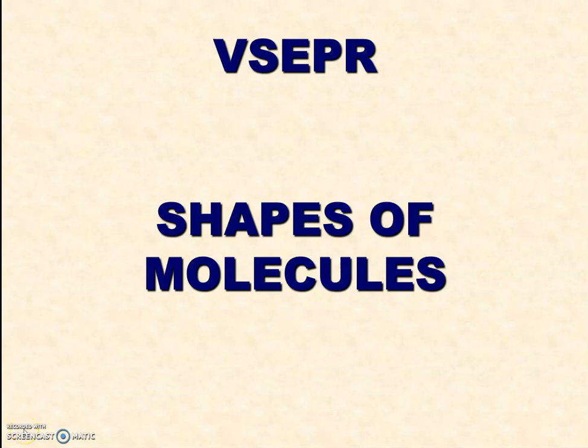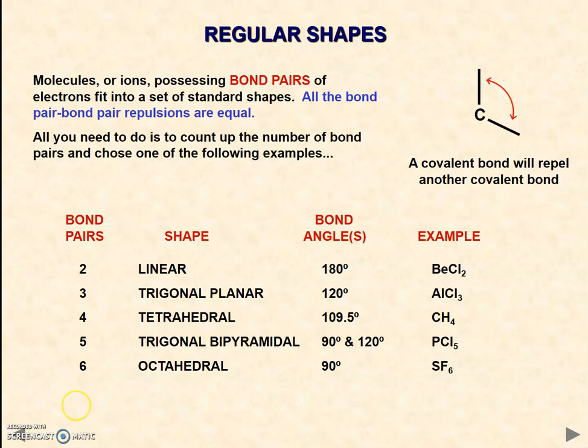In the previous video on VSEPR, we introduced the eight different shapes which occur based on bond pairs and lone pairs within molecules or ions. Here's just a quick recap of all these different shapes and their names.